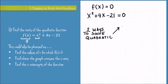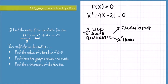One method is by factorizing, though this won't always work — we won't always have nice rational factors that we can find. The second method is to use the quadratic formula, and this will work for any type of quadratic equation. For this example, I know it will factorize nicely, so that's the method I will use here.